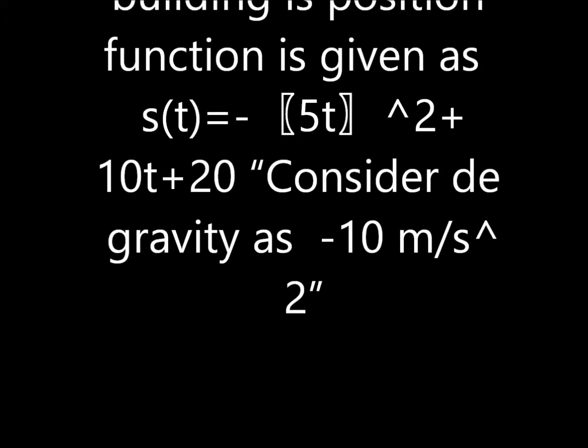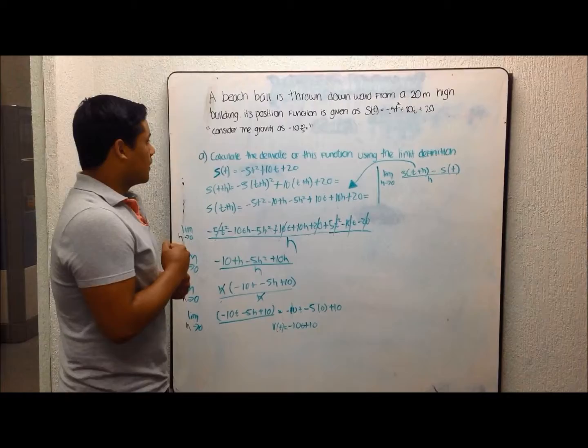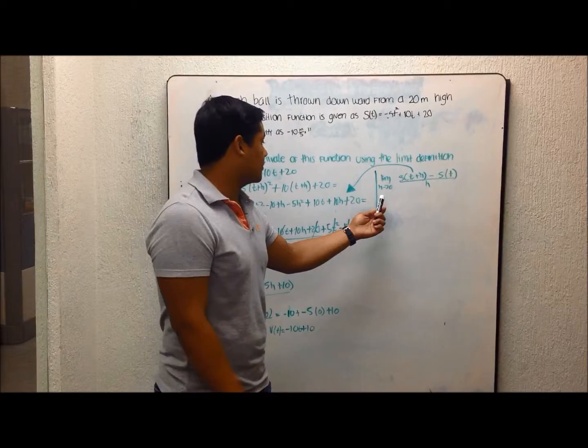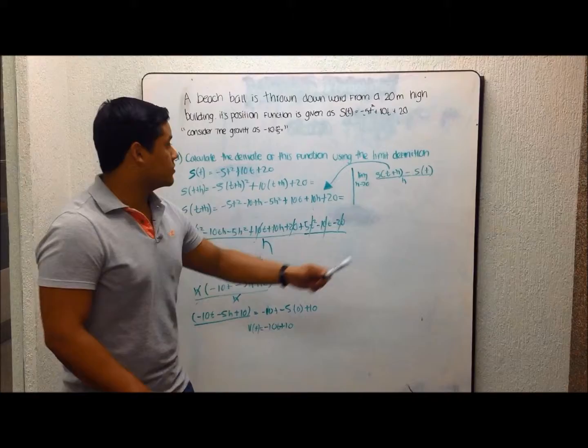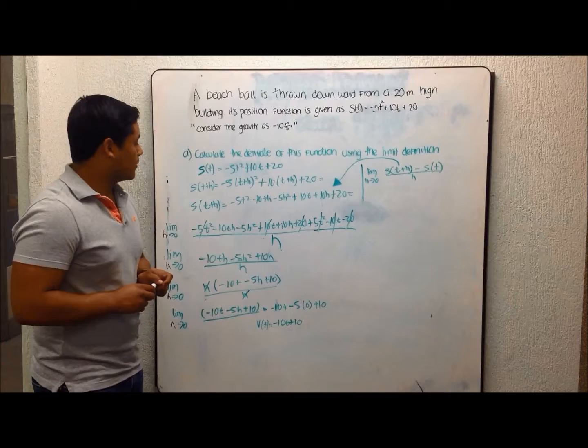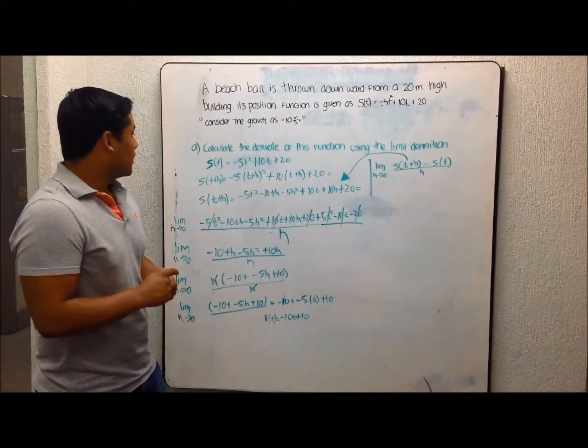The derivative of this function uses the limit definition. I have to calculate the derivative function with the limit definition. The limit definition is: limit as h approaches 0 of [s(t+h) - s(t)] all over h. So my original function is -5t² + 10t + 20, and I have to replace it with this term.